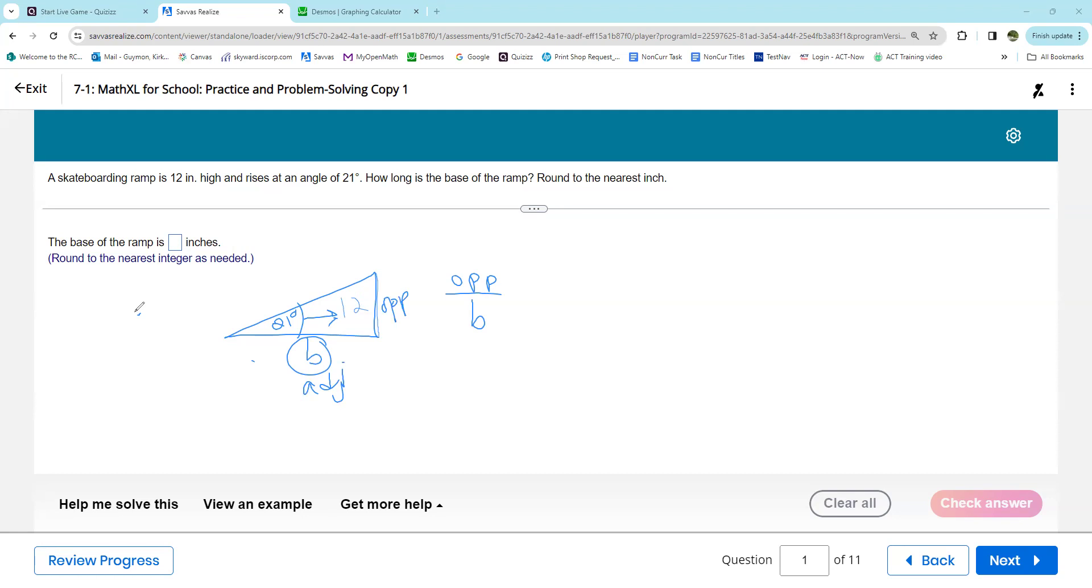It'd be adjacent, that's TOA. Tangent of the angle, 21 degrees, equals 12 over - I'll call it B since I wrote a B there. And it's never gonna work very well to have that B in the denominator.